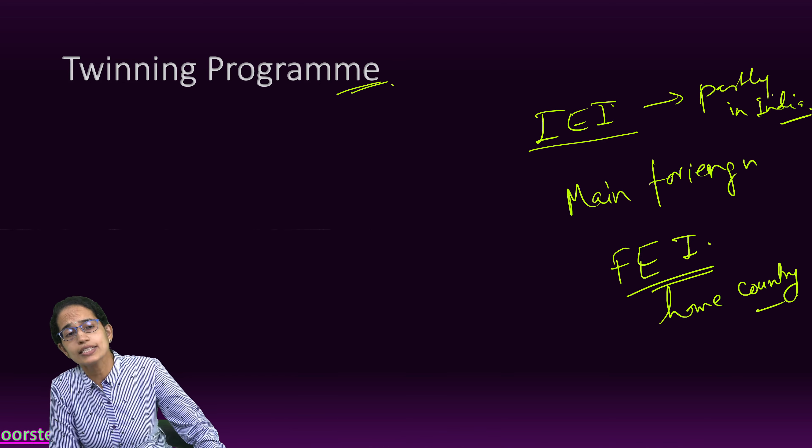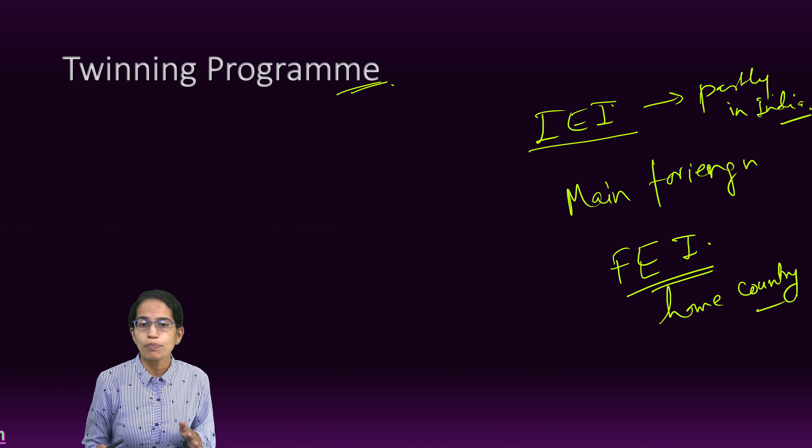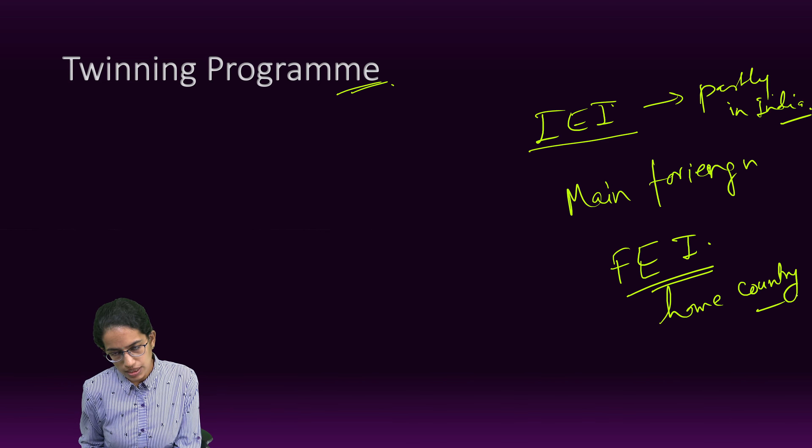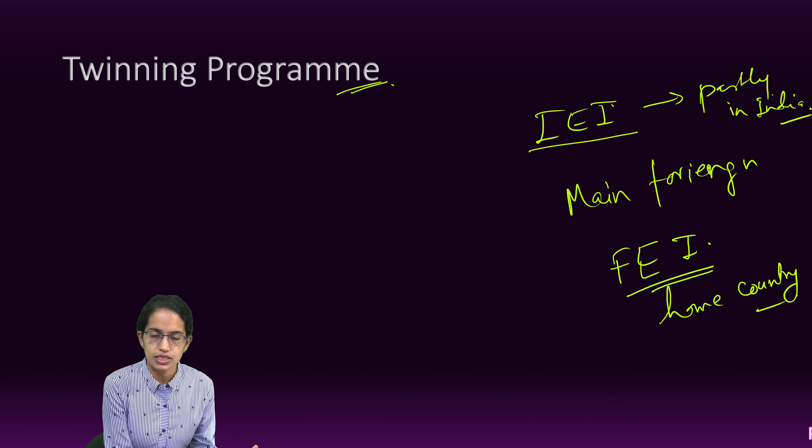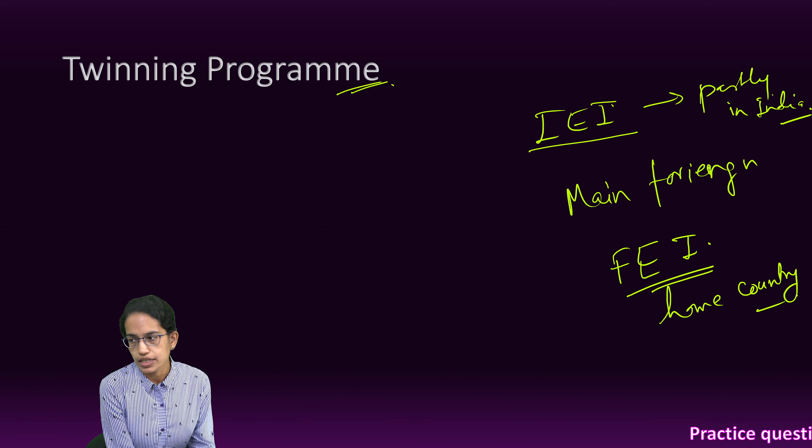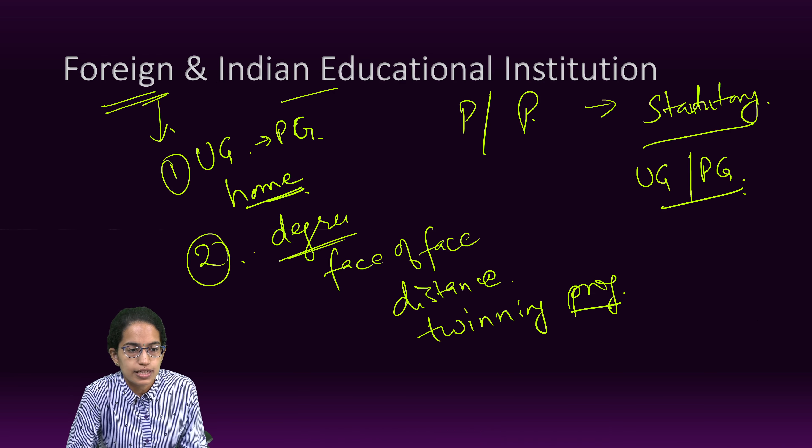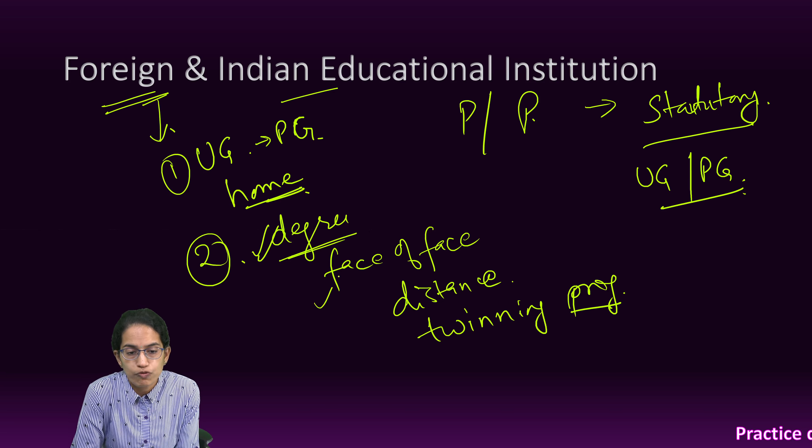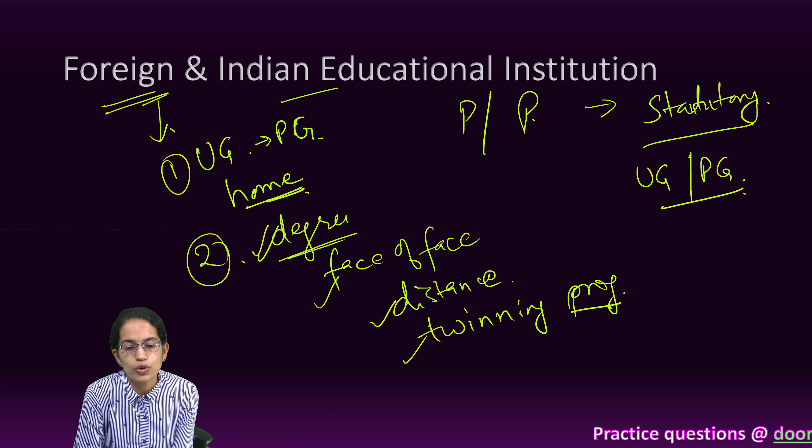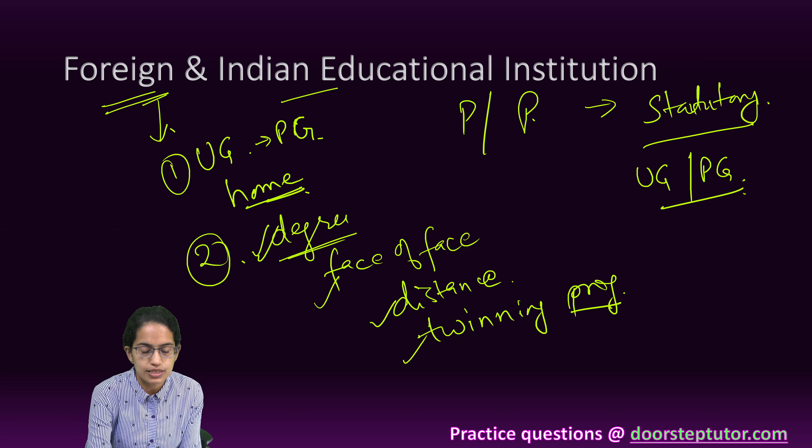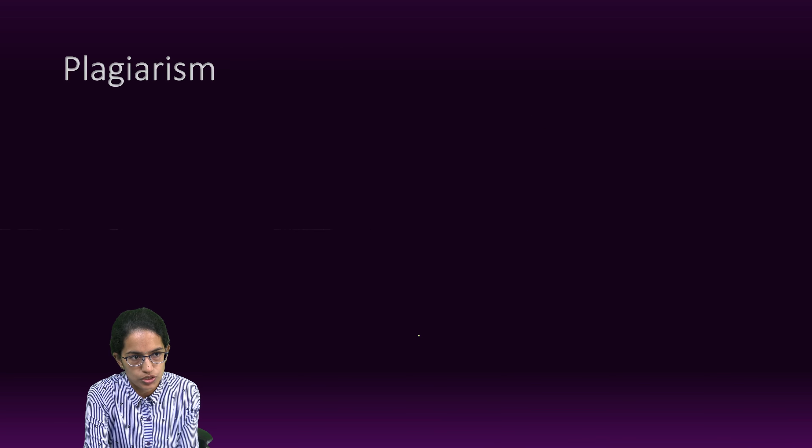So, that is what is twinning program. So, partly the course completion occurs in India. Partly the course completion occurs in the foreign nation which is the home country for the foreign educational institution and this is called as the twinning program. So, here we saw where the degree programs through face-to-face mode, distance mode or twinning program mode would be considered as a foreign educational institution.